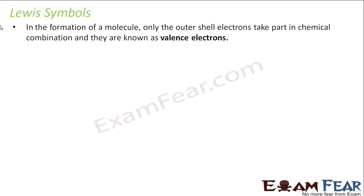In the formation of molecules, only the outer shell electrons take part in the chemical combination. The Lewis approach of chemical bonding assumes that in the formation of chemical bonds, only the outer shell electrons take part and they are called valence electrons.